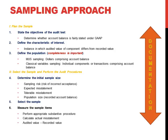Once you've defined your population, you select your sample and perform your audit procedures. You have to determine your initial sample size. Remember the criteria: sampling risk, the risk of incorrect acceptance, your expected misstatement, your tolerable misstatement determined when you calculated planning materiality, and then the population size — the recorded account balance. Select the sample and measure. In our case, the substantive procedure is confirming accounts receivable. Then if we don't get all the confirmations back, what do we do? Do we consider that a difference?